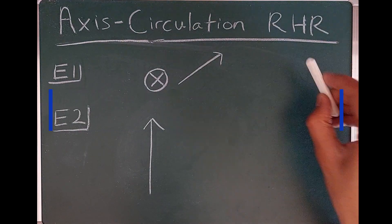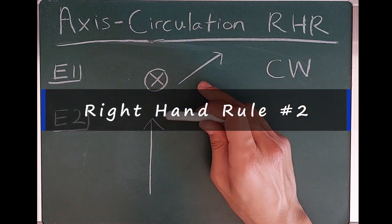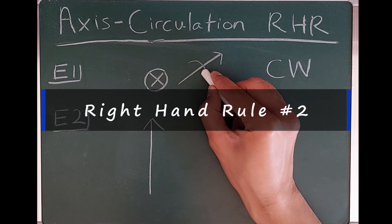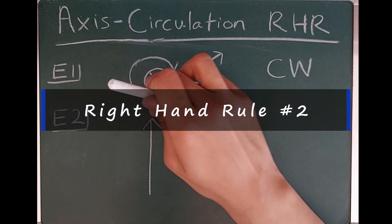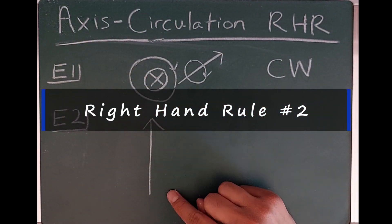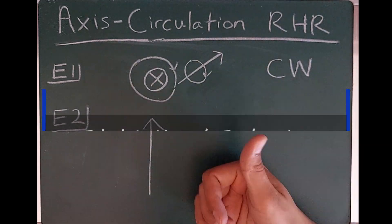Hi everyone, welcome back. Today we'll be talking about a second right-hand rule used for something other than cross products, and this right-hand rule is often called right-hand rule number two.